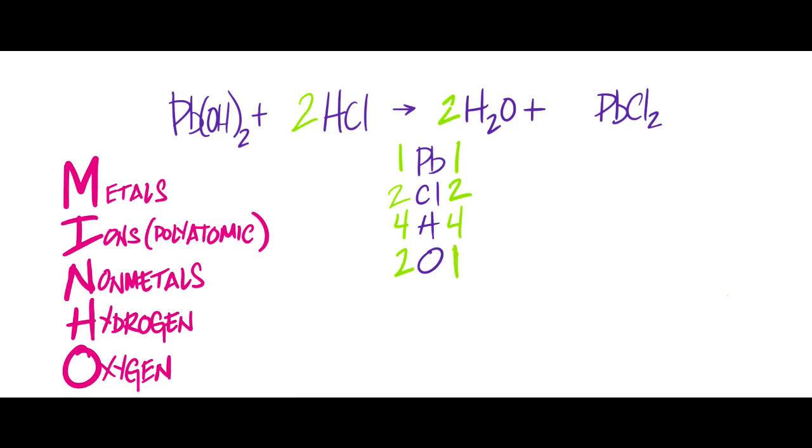And this is where you see the Minho method really coming into, it's becoming clear why it's so useful. And what I mean by that is we didn't have to intentionally try to balance the oxygen. When you follow this particular sequence, this progression, the elements towards the end, like hydrogen and oxygen, they tend to just kind of get balanced on their own. And that's what happened here. Now we have a completely balanced equation. And it was easier having done it this way than if we would have just randomly picked an element like oxygen or hydrogen and just started with those instead.